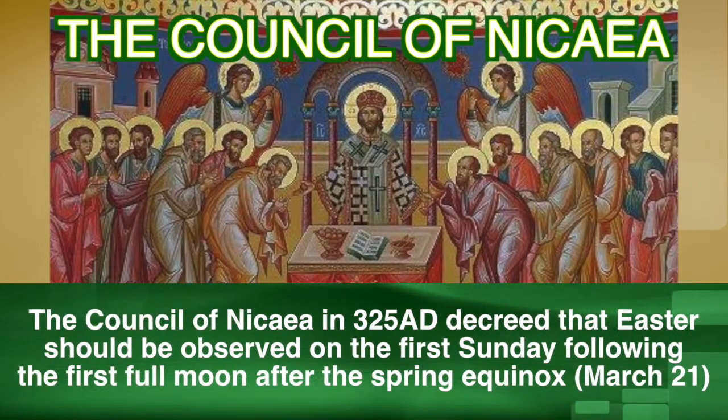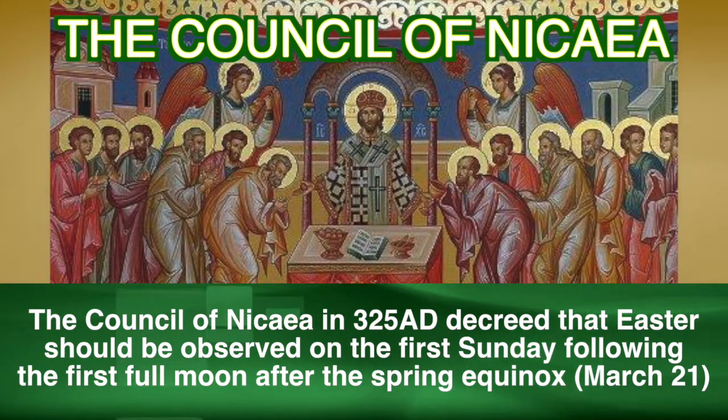Let's talk about why Easter changes each year. In 325 AD at the Council of Nicaea, the church decided there needed to be a formula to decide when Easter fell. They knew Jesus was resurrected on Sunday, but they took the calendar and the first full moon after March 21st. Easter can fall anywhere between March 22nd to April 25th — it is the first full moon after the 21st of March. This is why Easter falls on different Sundays in March or April.